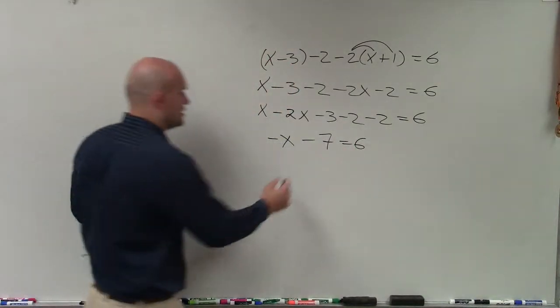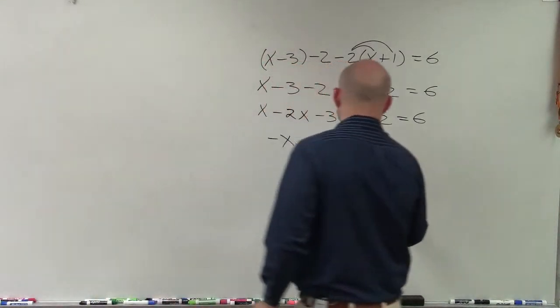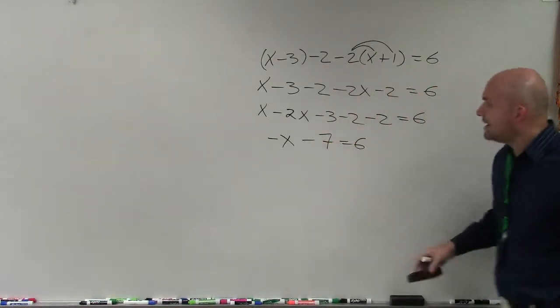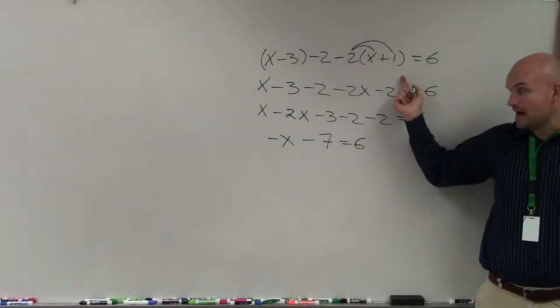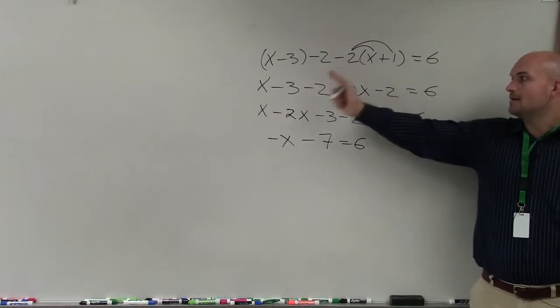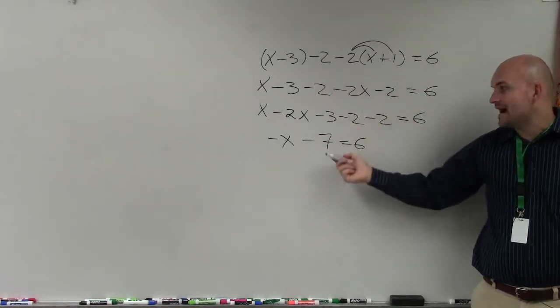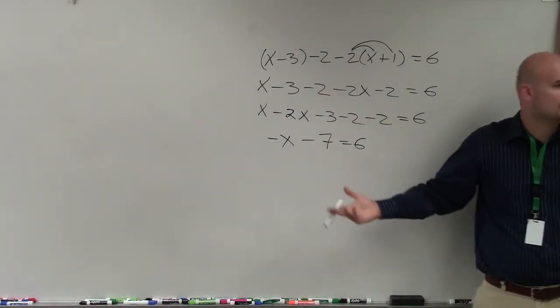Now, to go ahead and solve, add 7 on both. So I'm sorry. So now, what I have done by applying distributive property, by combining like terms, I have now simplified this to a two-step equation where you can solve it.